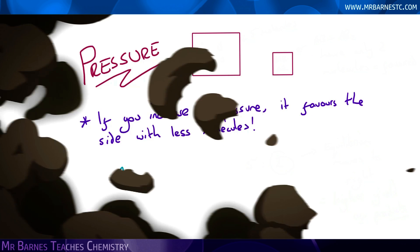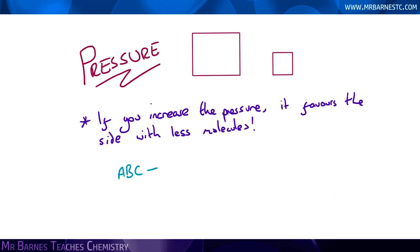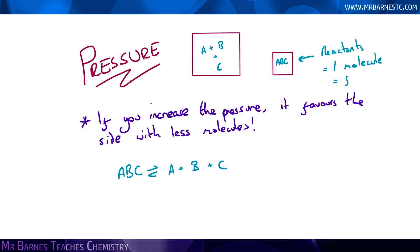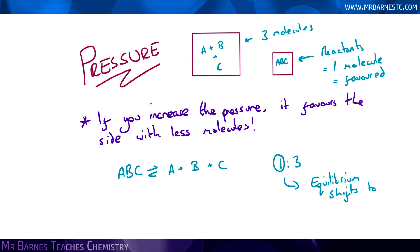Similarly, if I have a reactant ABC and it breaks down to A plus B plus C, you can see that I've only got one reactant — one molecule — while my products give me three. Therefore I have a ratio of one to three, and my equilibrium will shift to the left, so my yield of products will go down.